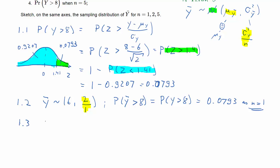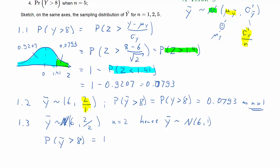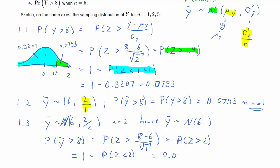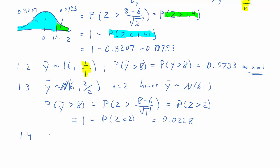Let's move on to the next question. Now we have a larger sample size — not a trivial sample of 1. The sample size is now 2, and that changes the variance of ȳ to 2 divided by 2, which equals 1. So the distribution for ȳ is normal with mean 6 and variance 1. The probability that ȳ is larger than 8 translates to the probability that Z is larger than 2, which equals 1 minus the probability that Z is smaller than 2, giving 0.0228.